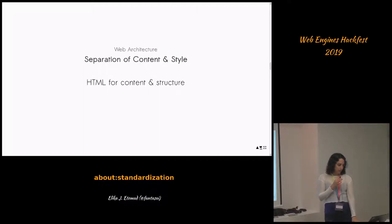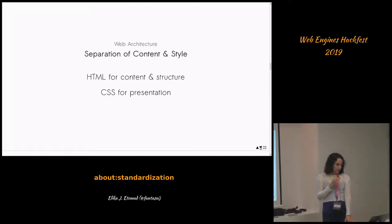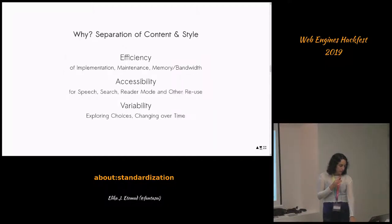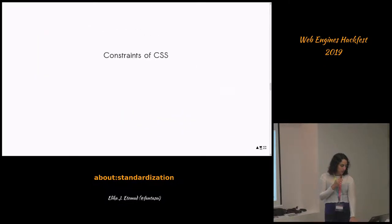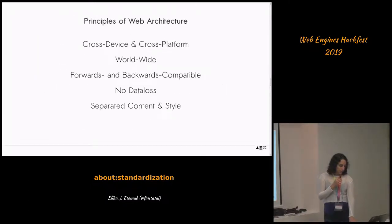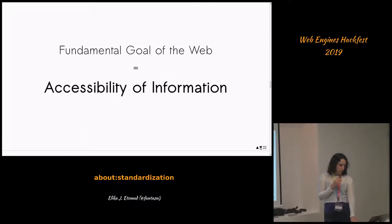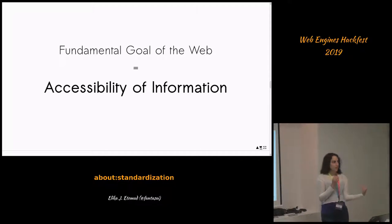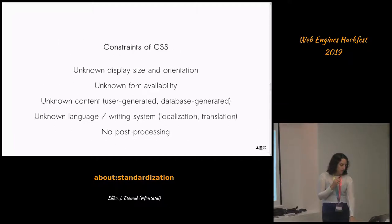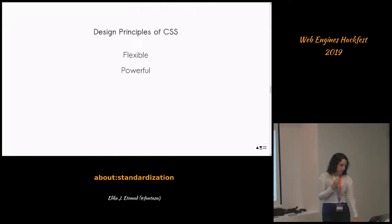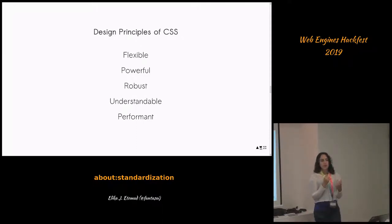Separation of content and style is also important for HTML and CSS, for reasons including accessibility, efficiency, and being able to change things over time. The core goal of all these principles is that we want data to be accessible — the web's goal is basically to make information accessible to everyone, including people with old browsers and people anywhere in the world. Each working group has to understand what their principles are and what makes a good feature.